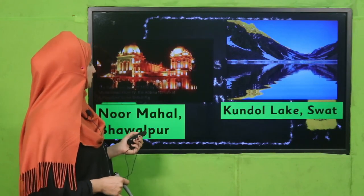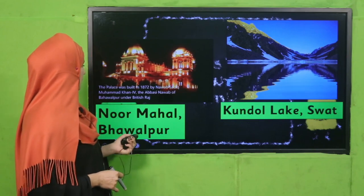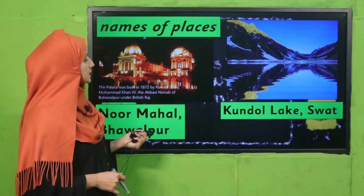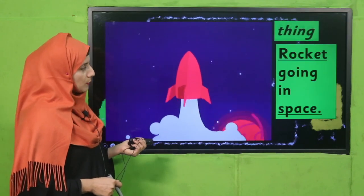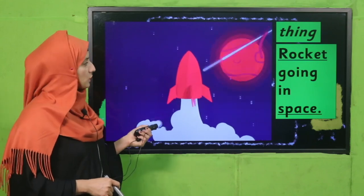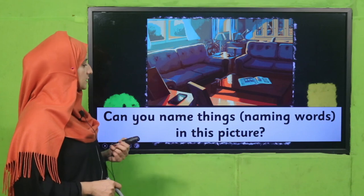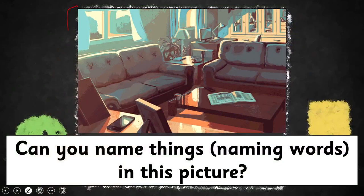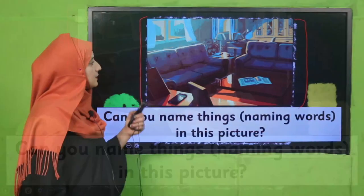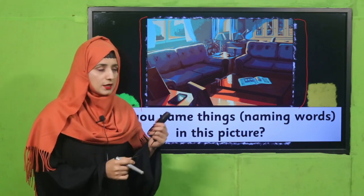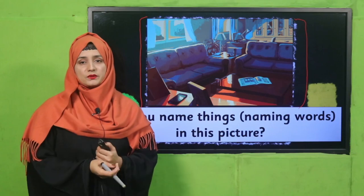Next, names of places — Normal, Bahawalpur — these are names of places. Name of things — a rocket going into space is also a naming word. Now can you name the naming words in this picture? See the picture carefully and find out different naming words. Pause the video and inform these naming words to your teacher.